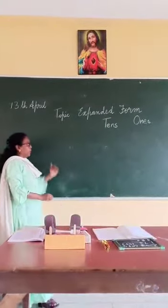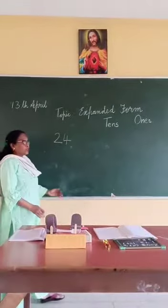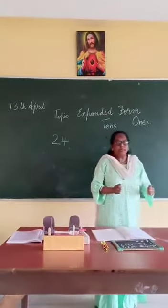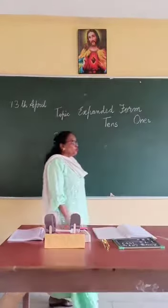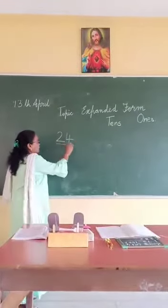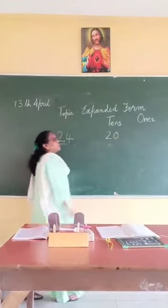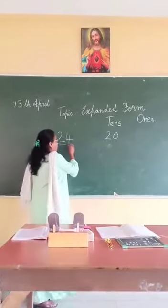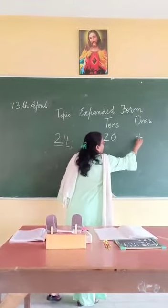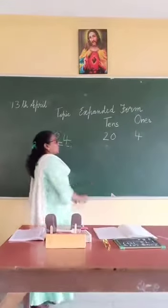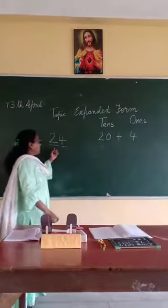I will give you a number: 24. We have to stretch this number, so we call it expanded form. 2 will go in the 10s place, so it becomes 20, and 4 will go in the 1s place. So 20 plus 4 gives you 24.